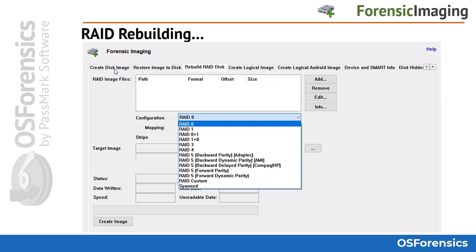The next tab is the Rebuild RAID Array tab. A forensic investigator may need to deal with physical disks that are part of a RAID configuration without access to the RAID controller needed to recreate the array. Given a set of disk images, OS Forensics can rebuild the logical image based on specified RAID parameters. RAID parameters from software RAID created under Linux and Windows can be automatically detected — simply add the individual disk images, choose the correct RAID configuration if known, and click Create Image.